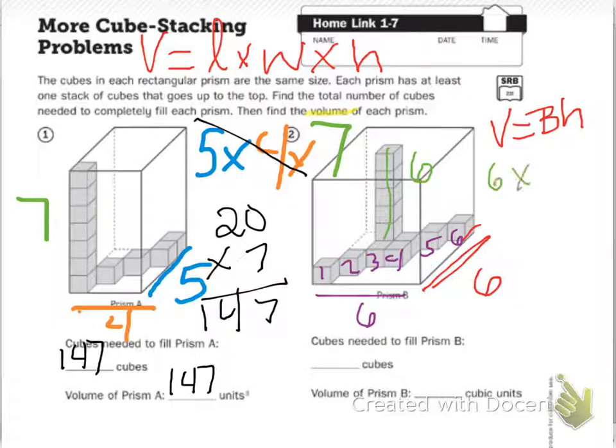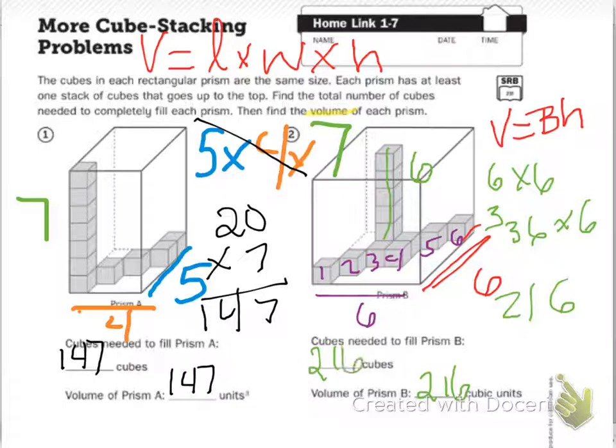So I have six times six equals thirty-six. So that's my base, right? So my base, thirty-six times six equals... Six times six is thirty-six. Carry the three. Three times six is eighteen. Eighteen, nineteen, twenty, twenty-one. Two hundred and sixteen cubic units. So two hundred and sixteen cubes to fill.